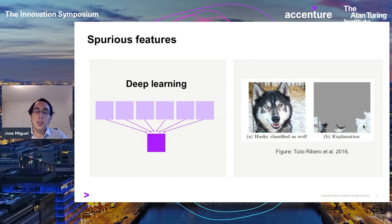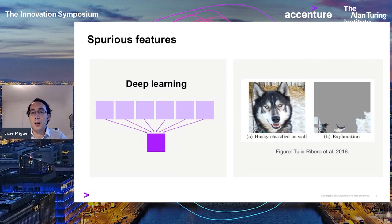This is shown when you explain the prediction of a classifier on an image of a dog that is incorrectly classified as a wolf because there is snow in the background. When you try to explain why the network believes it's a wolf, we see it is looking at the background pixels — the snow — instead of the shape of the animal.